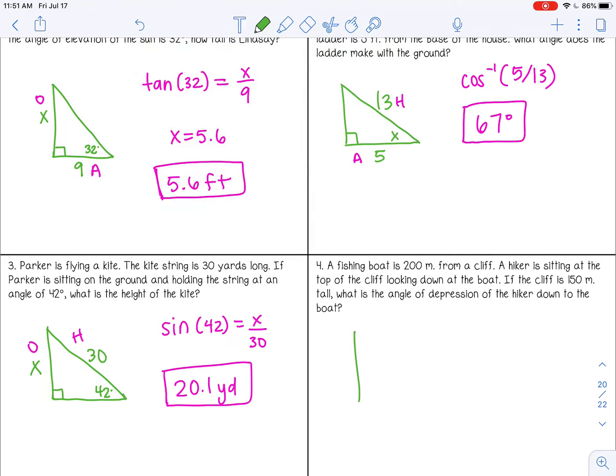Last example. A fishing boat is 200 meters from a cliff. So think about a cliff. So this would be my cliff here. And my boat would be out here.